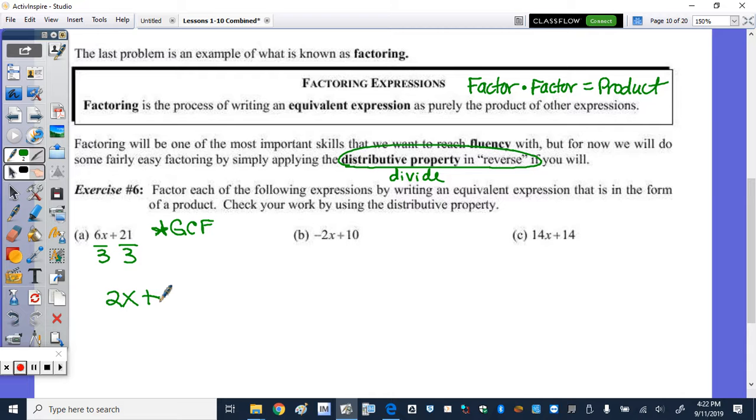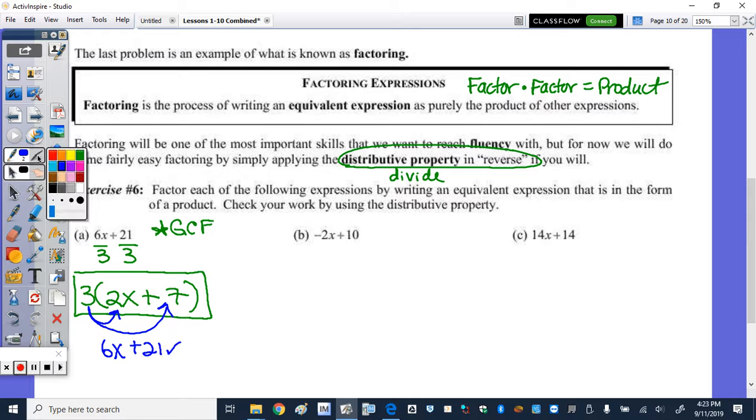But we need to write our answer as a product. So what multiplies to give us the 6x plus 21, we need to put that in parentheses and bring down the 3. And as I said, you can check by distributing. So we'll check this first one and we'll leave the others alone. 3 times 2x is 6x. 3 times 7 is 21. It checks out.